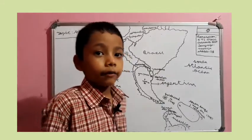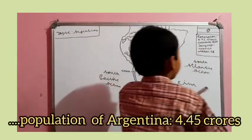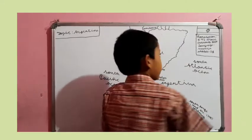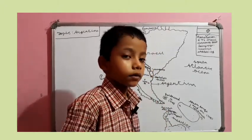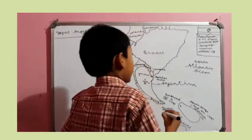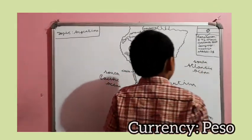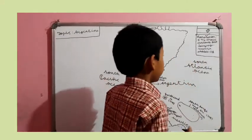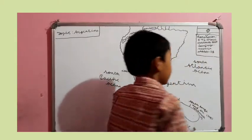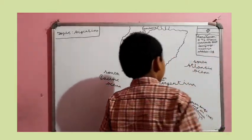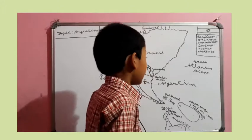The language of Argentina is Spanish. The population of Argentina is 4.45 crores. The currency of Argentina is pesos. There are 28 states in Argentina.